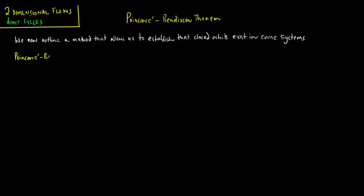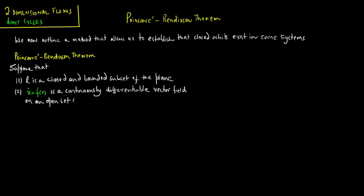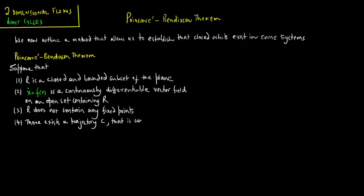We now state the theorem. Suppose that: number 1, R is a closed and bounded subset of the plane; number 2, x-dot equals f of x is a continuously differentiable vector field on an open set containing R; number 3, R does not contain any fixed points; and number 4, there exists a trajectory C that is confined in R, in the sense that it starts in R and stays in R for all time.